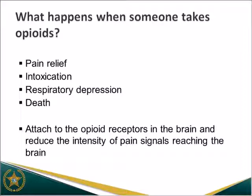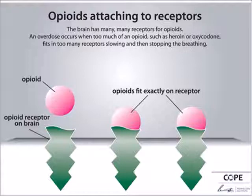When someone takes opioids, they would first experience pain relief. The more you take, the more symptoms you'll experience: intoxication, eventually respiratory depression — meaning your breathing is very shallow — eventually you stop breathing, and that's what would actually result in death in an opiate overdose. You have specific receptors in your brain called mu receptors. When you ingest opioids, those opioids seek out and bind to those receptors, kind of like a key fitting into a lock. The more of those receptors occupied by opioids, the more symptoms you experience — pain relief, then intoxication, respiratory depression, and eventually death.